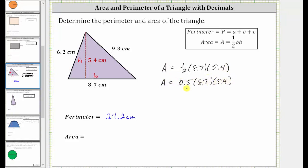So multiplying from left to right, let's determine the product of 0.5 and 8.7. But to do this by hand, let's change the order and determine 8.7 times 0.5.